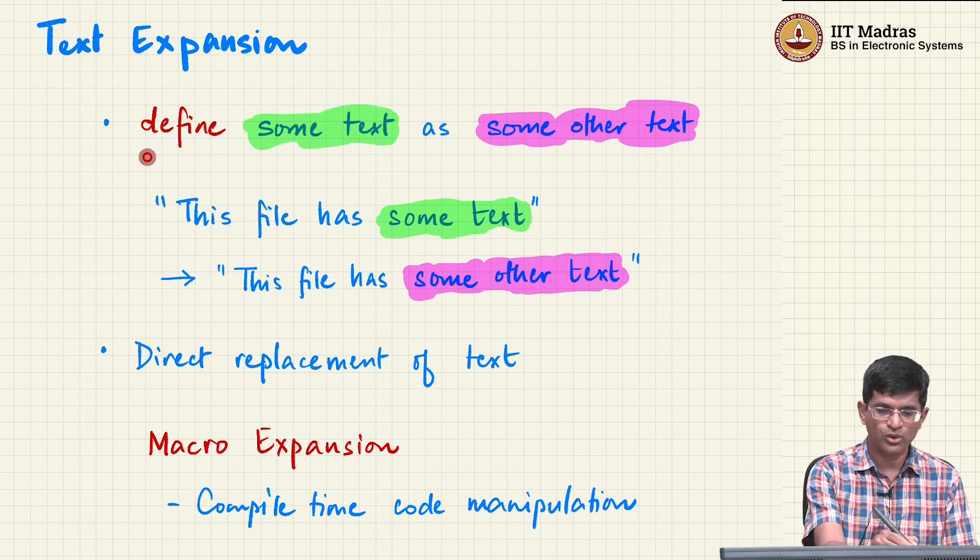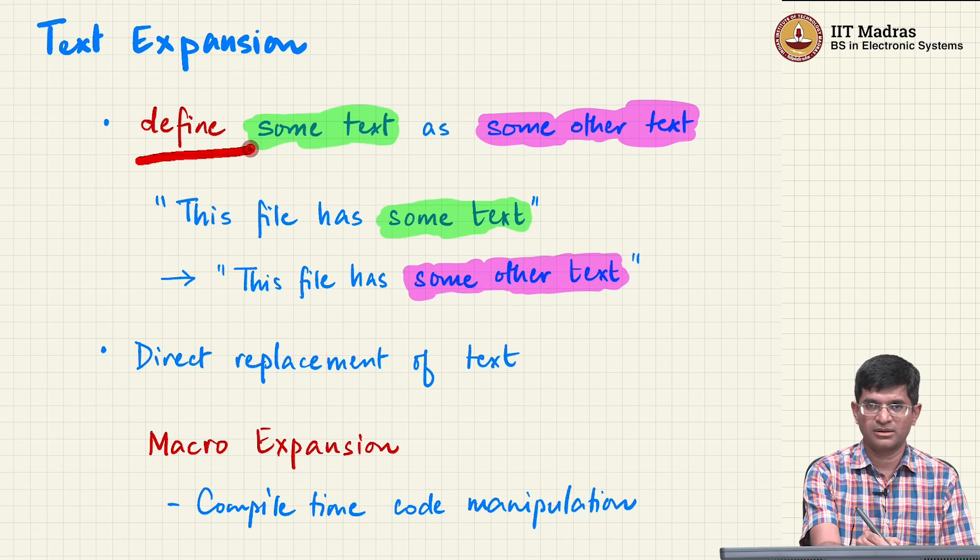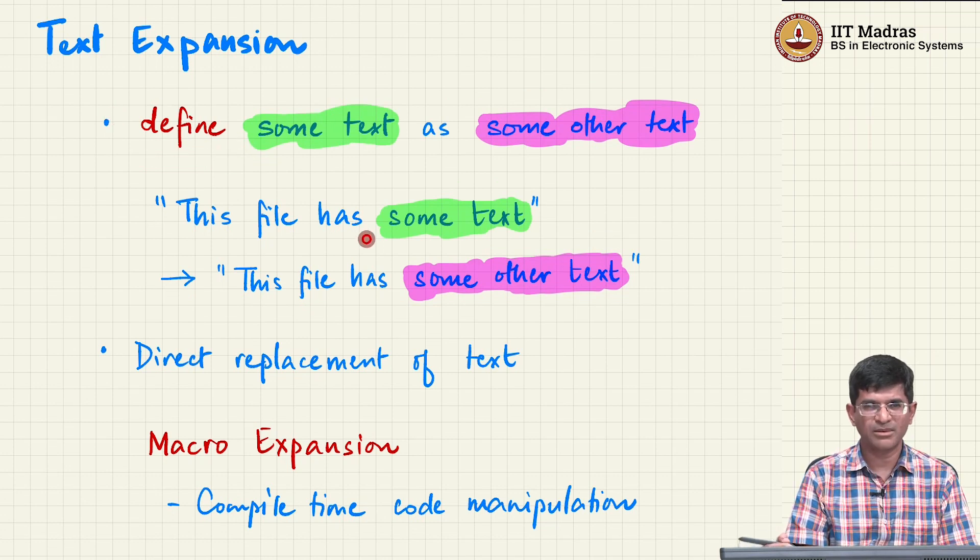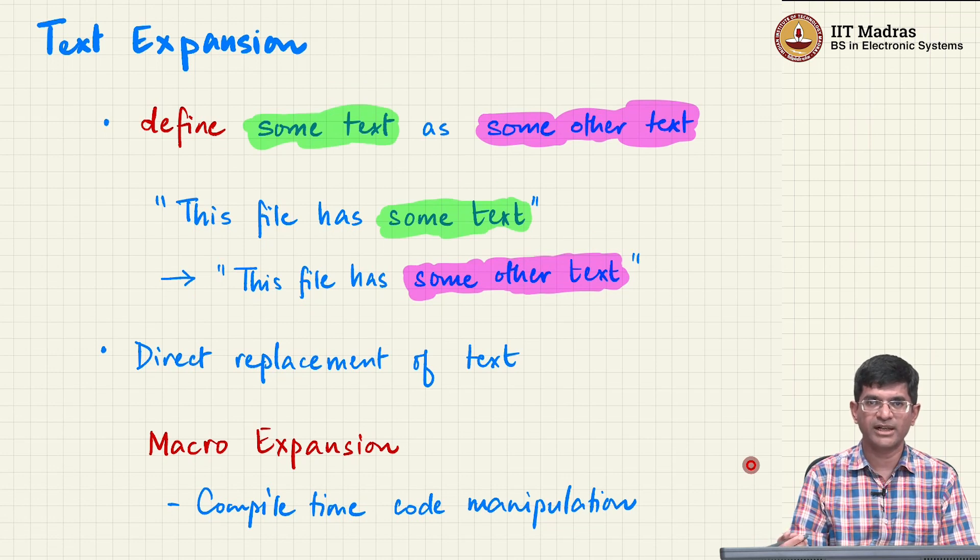Effectively, what it says is you use a word called define. This actually occurs in your C code itself and it is typically prepended by the hash symbol. In some cases, especially in American English, that is sometimes referred to as the pound symbol, but we usually call it the hash symbol. I will be referring to it as hash define.